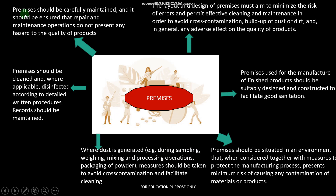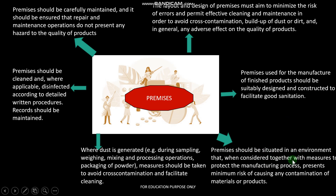Premises should be carefully maintained, and it should be ensured that repair and maintenance operations do not present any hazard to the quality of the equipment. The layout and design of the premises must aim to minimize the risk of error and permit effective cleaning to avoid cross-contamination. The premises should be easily cleaned. The premises used for manufacturing of finished products should be suitably designed and constructed to facilitate good sanitation, and should be situated in an environment that presents minimum risk of causing any contamination of materials and products.